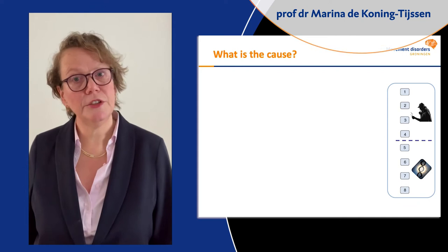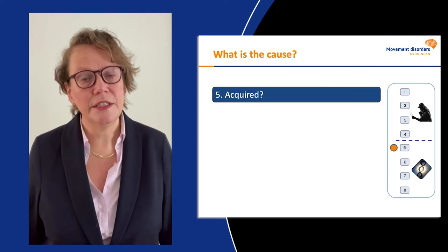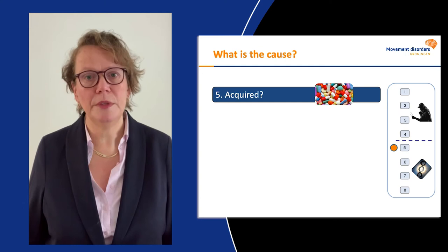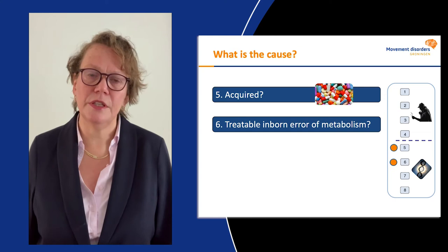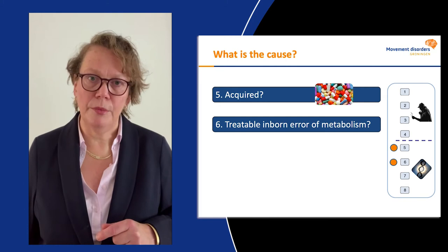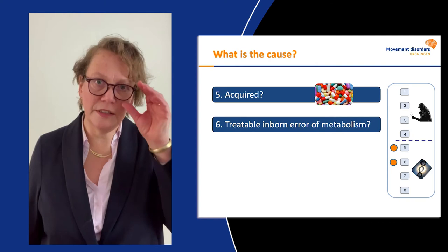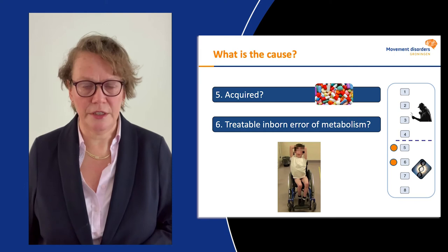After we determine the clinical syndrome, we need to know the cause of the dystonia in this child. The first thing to consider is whether there is an acquired cause — especially medication can induce several kinds of movement disorder in children. The second step is to consider whether there is a treatable inborn error of metabolism. These will show up on genetic testing, but for some you want to start treatment before genetic testing is done. In our patient, these two forms were not considered.